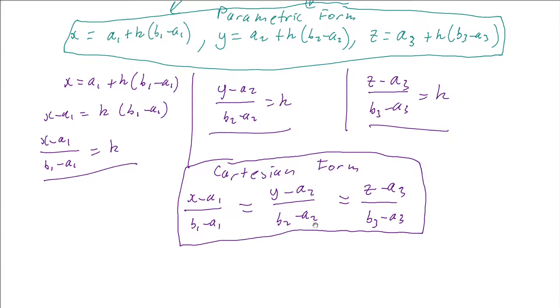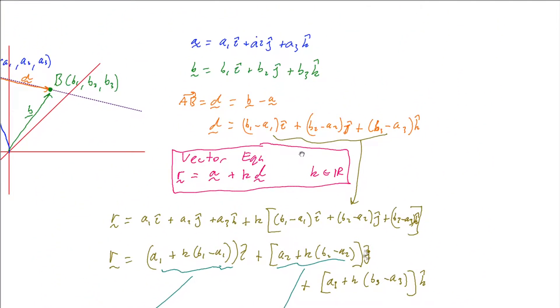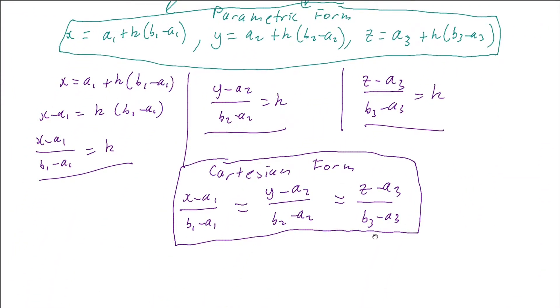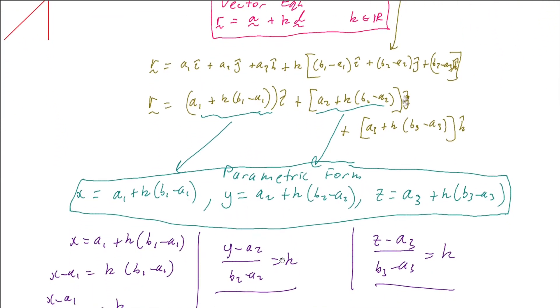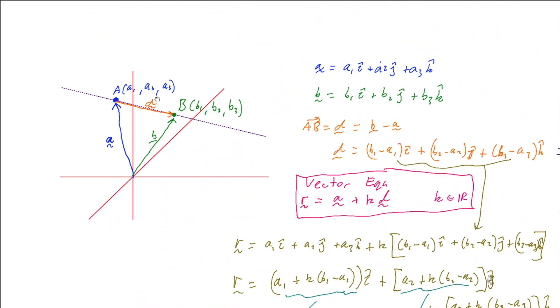And the only thing that we can do to make this any nicer is just simplify the denominators. We've got B1 minus A1, B2 minus A2, and B3 minus A3, which if you look, are the three components of our D. So we could just call this D1i plus D2j plus D3k, and therefore rewrite our Cartesian equation as x minus A1 over D1 equals y minus A2 over D2 equals z minus A3 over D3. And those together give us our Cartesian form in two different ways. So there we go from using simple vector addition geometry we can define a parametric vector equation, a parametric equation, and a Cartesian equation for a straight line in three dimensions.